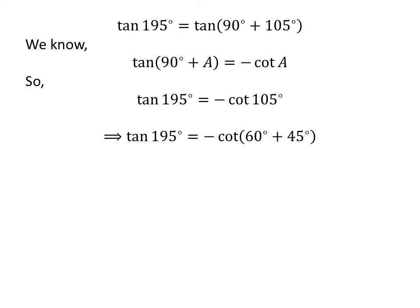Again, 105 degrees is equal to 60 degrees plus 45 degrees. So, tangent of 195 degrees is equal to minus cotangent of 60 degrees plus 45 degrees.